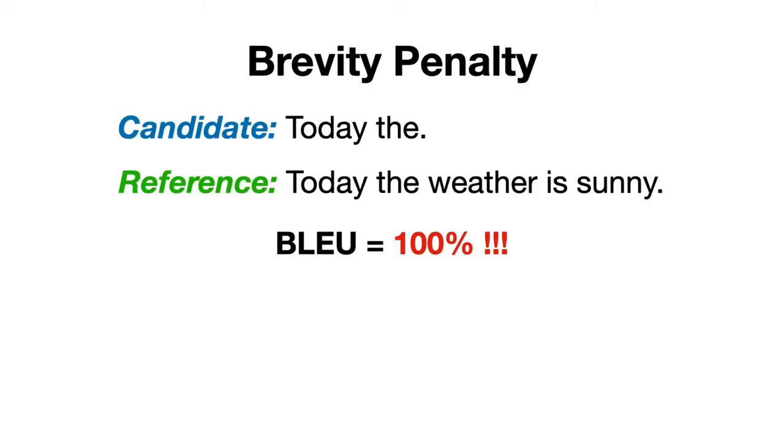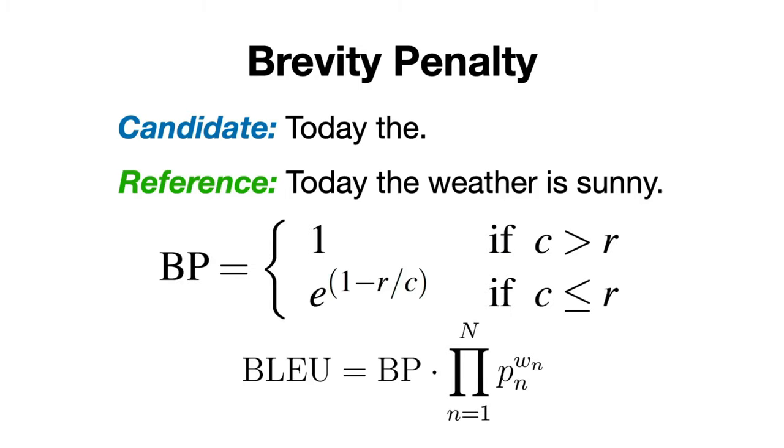Well, the solution the BLEU score proposes is to introduce a brevity penalty score that we multiply the BLEU score with and that is calculated using the following formula. It says that if the length of the candidate sequence is less than or equal to the length of the reference sentence, then we multiply the BLEU score with the following number, e to the power of 1 minus r divided by c.